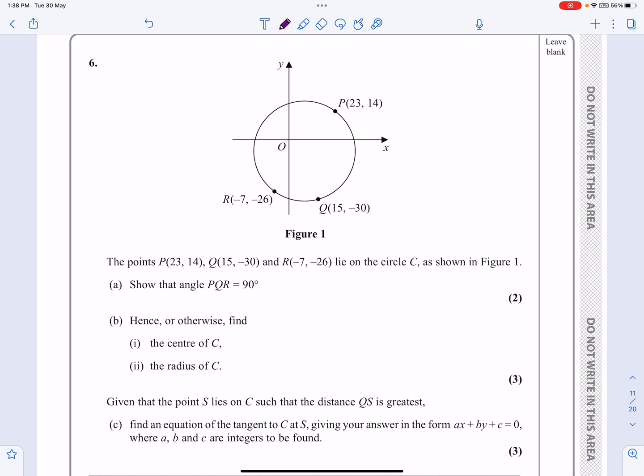So reading it, it says we've got those three points P, Q and R that lie on a circle. Yeah, okay, so C's a circle. Show the angle for part A, show the angle PQR is equal to 90 degrees. So PQR, there's PQ, there's QR. Yeah, it looks like it, doesn't it? So we've got to show that that is equal to 90 degrees.